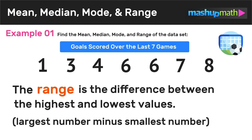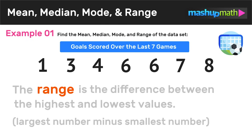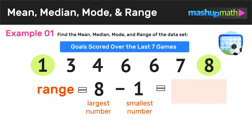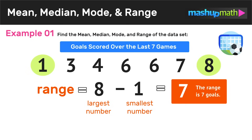And now the last thing we have to do is find the range of the data set. The range is the difference between the highest and lowest values, so it's just the largest number minus the smallest number. For this data set, the largest number is eight and the smallest number is one. So to find the range, we just perform eight minus one, which equals seven. We can conclude that the range of the data set is seven goals scored.